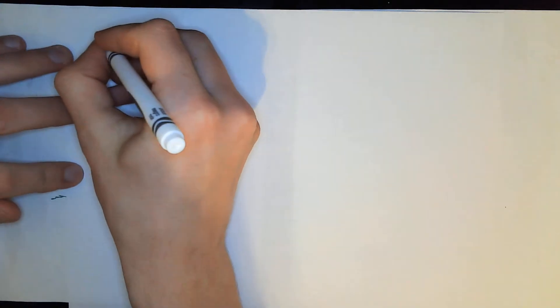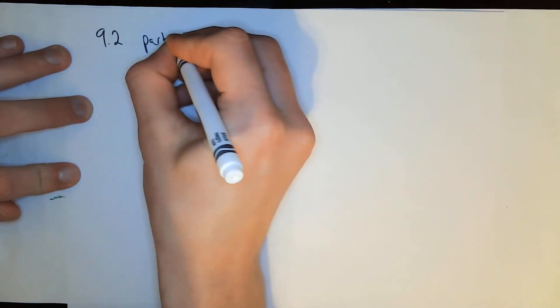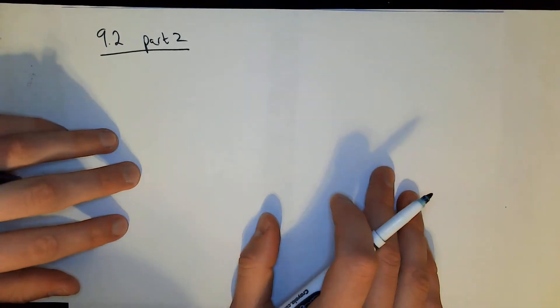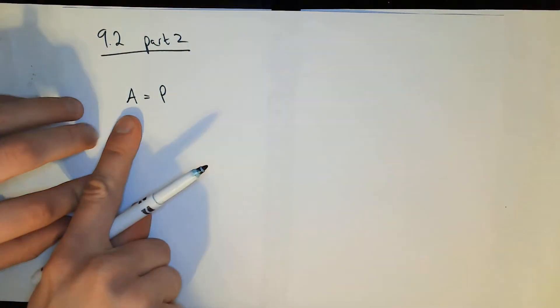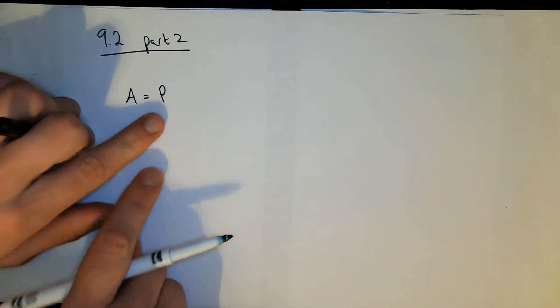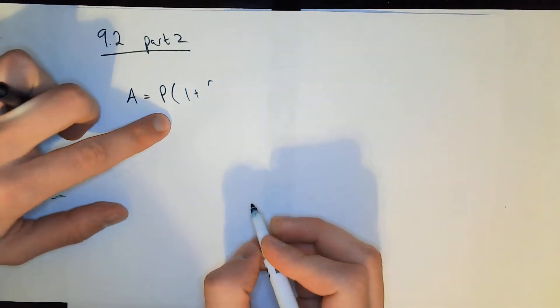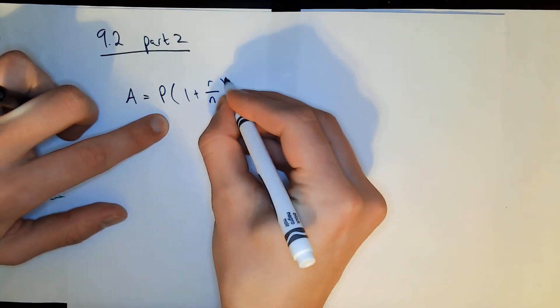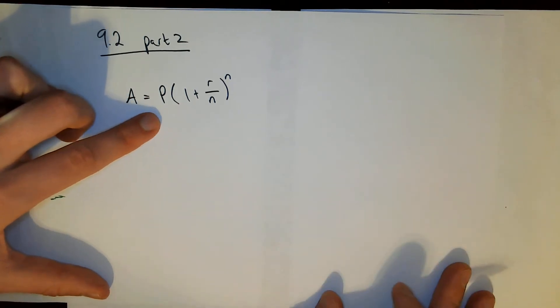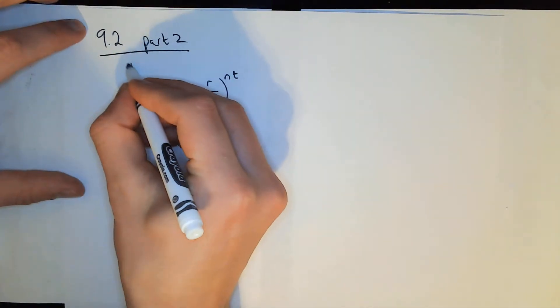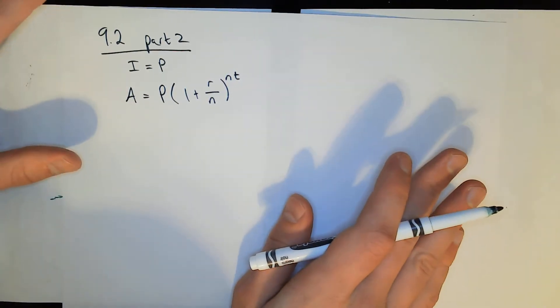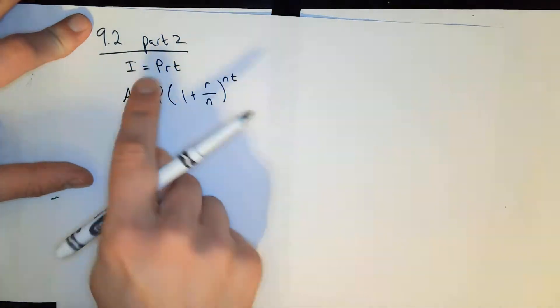Let's continue section 9.2, part 2, talking about compound interest. Last time I left off with a cliffhanger about what happens when we have an infinite number of compoundings. Just to remind you, we have a formula for the future value — the amount in an account — given some principal, some rate, some number of compoundings N, times time in the exponent. We also had the simple interest formula: no compounding, just the product of principal, rate, and time.